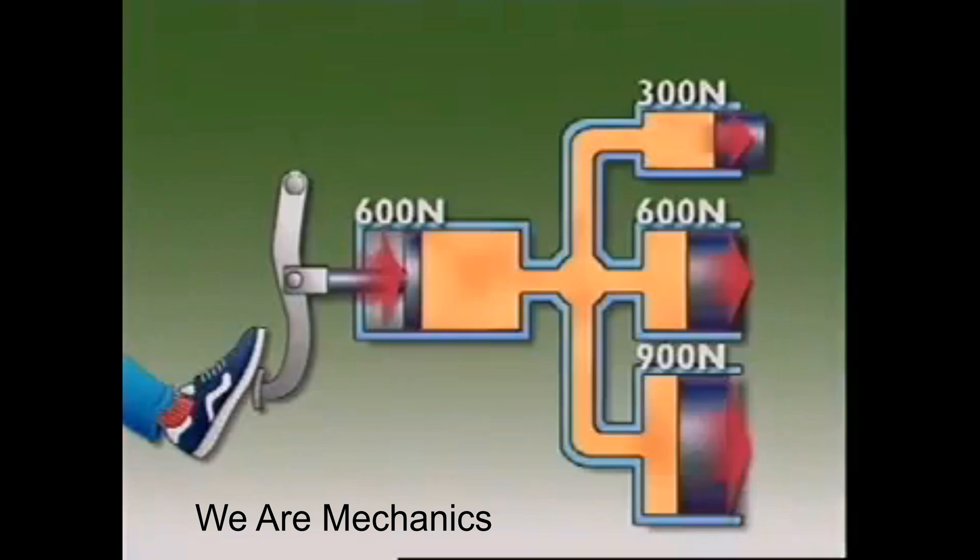The top cylinder is smaller than the master cylinder, so the force it exerts will be less than the force applied to the master cylinder. The middle cylinder is the same size as the master cylinder, so the force from it will be the same. The bottom cylinder is larger than the master cylinder, and so is its force.